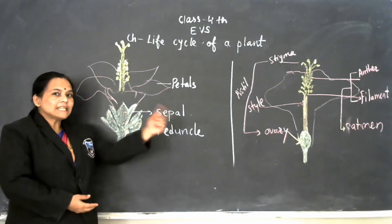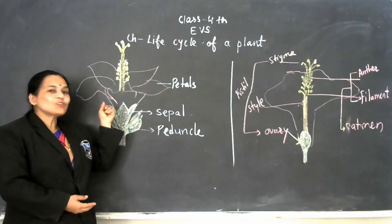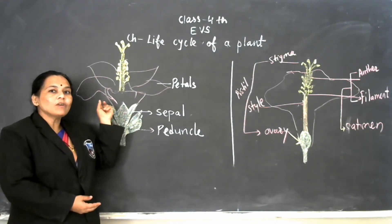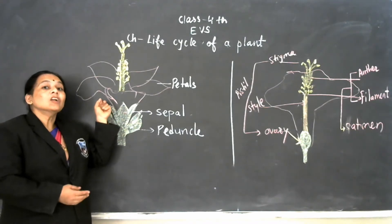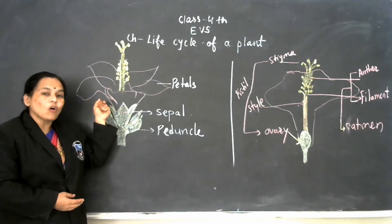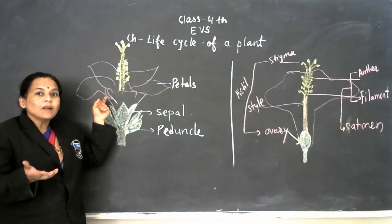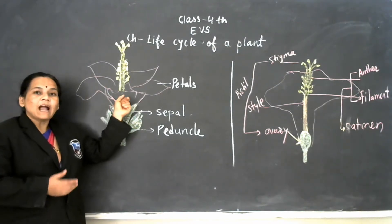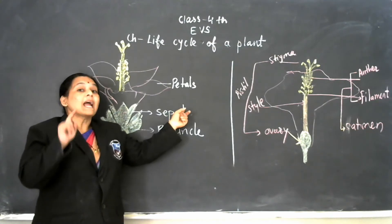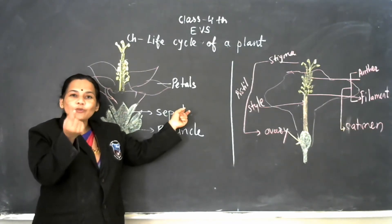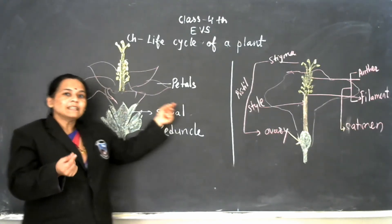As I have told you earlier, seeds are produced with the help of flower. That means flower is the reproductive organ of that plant. Here, plant gives flower, and after flower, the next stage is fruits. And in that fruits, you can find seeds.